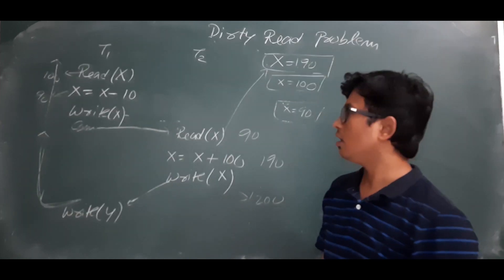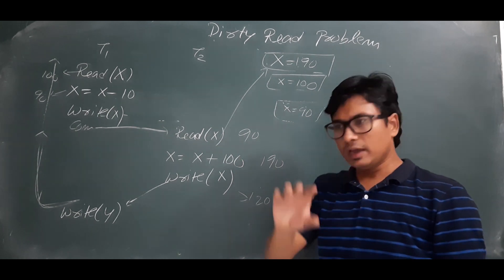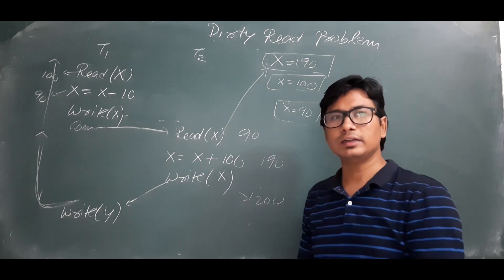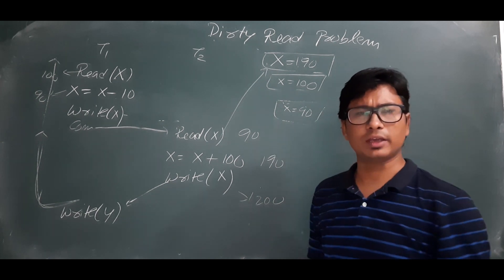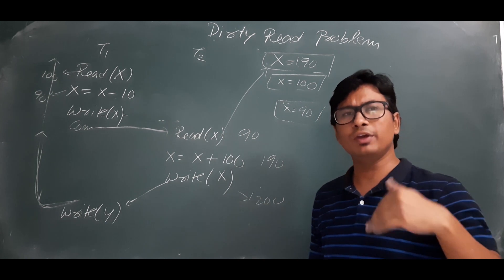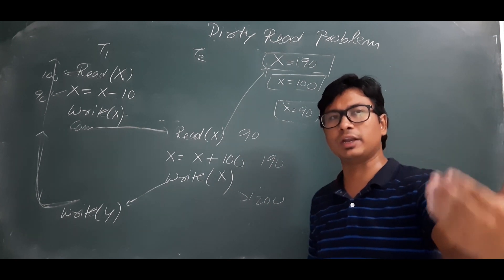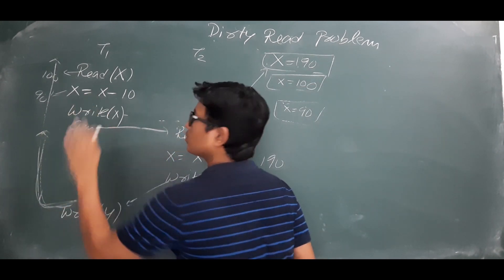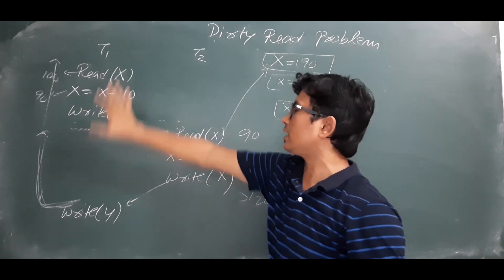Once rolled back, it goes up to the commit operation only, not the entire way. It is simply like this: in MS Word, you type content, press Ctrl+S to save, then write more content, then press undo. Keep clicking undo — where does it stop? It stops at the last save point. Similarly, if you roll back, it rolls back only up to the commit operation. So this would have been fine, but T2 read from an uncommitted transaction, which caused the dirty read problem.